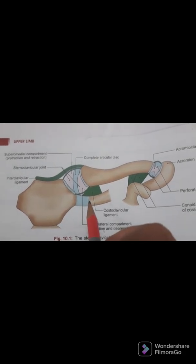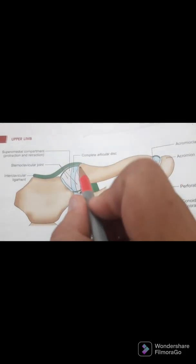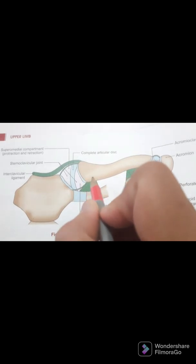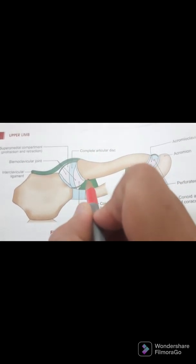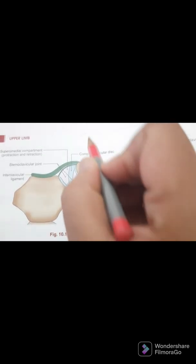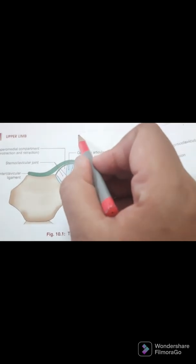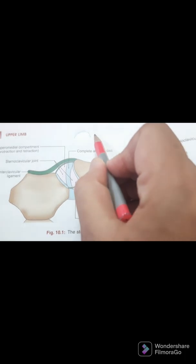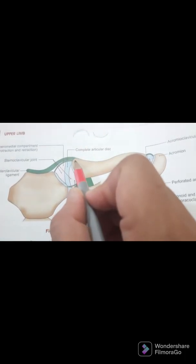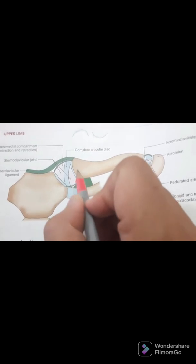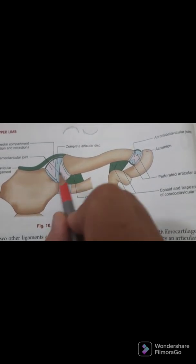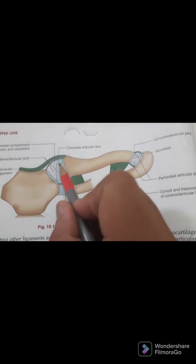You can see in this diagram the articular surface — the clavicle is covered with fibrocartilage and the surface is convex. The sternal surface is smaller than the clavicular surface, and because of this shape, it is classified as a saddle joint.